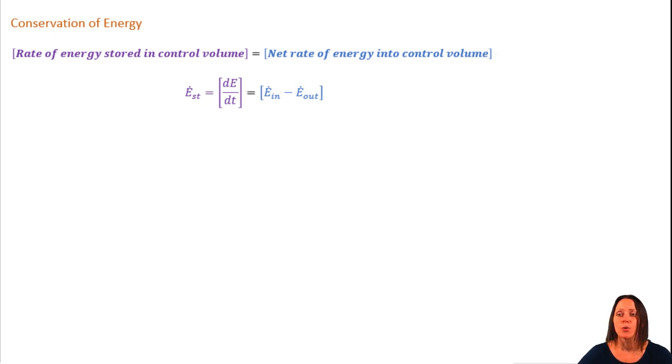In other words, the rate of energy transfer in minus the rate of energy transfer out. We know that we have several ways that energy can cross the system, but in this class we'll focus only on heat transfer. So the net of energy transferred into the system is really the net amount of heat transfer into the system.